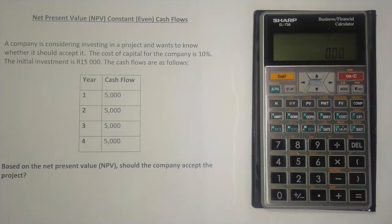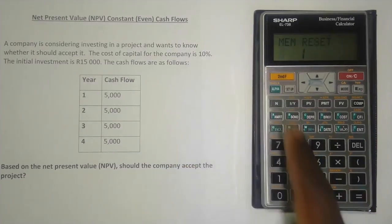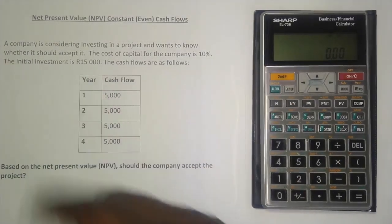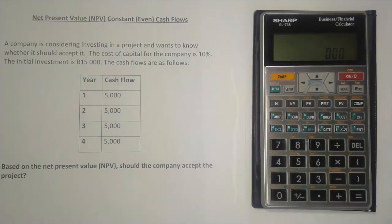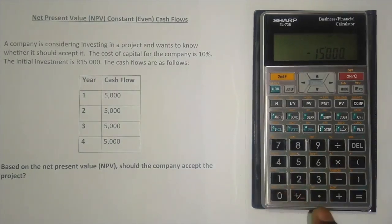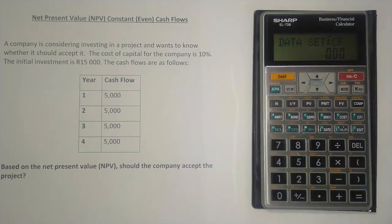There are two ways to do this with the financial calculator. For the first method, let's clear the calculator memory: press second function, then alpha, then zero, then zero again to confirm. Now enter the initial investment of 15,000 rand. Since we're paying it out, it's negative — press 15,000, then plus/minus to make it negative. Remember to use plus/minus and not the negative sign, then press enter. That's the cash flow at year zero.